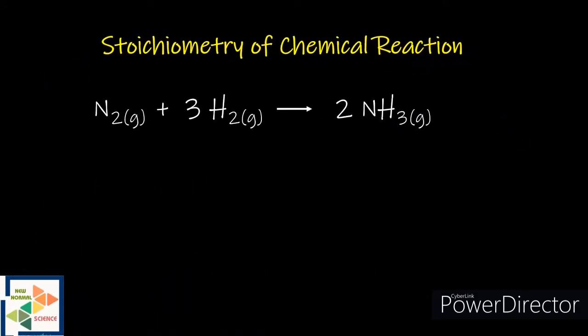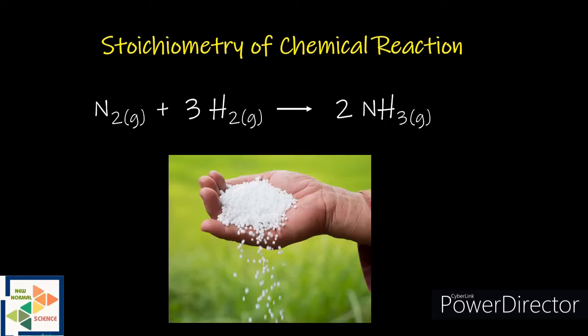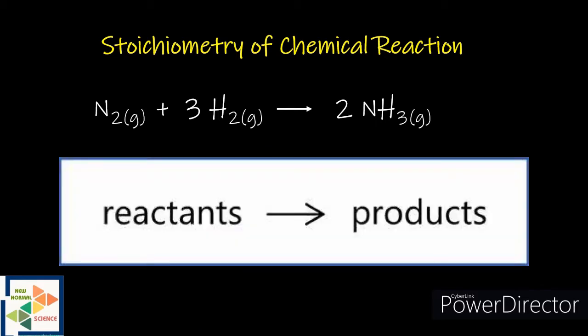To produce ammonia, nitrogen gas should react with hydrogen gas. But how much ammonia is produced in this reaction? To produce urea fertilizer, you need a maximum supply of ammonia. How much urea fertilizer can be manufactured from the ammonia? To solve these problems, quantitative information about chemical reactions — such as how much one reactant combines with a given amount of another reactant — must be determined.